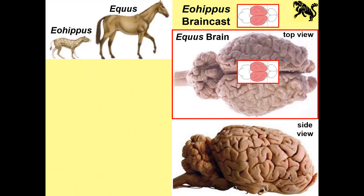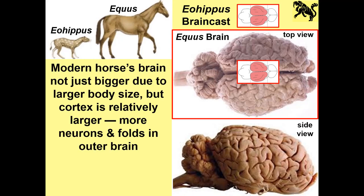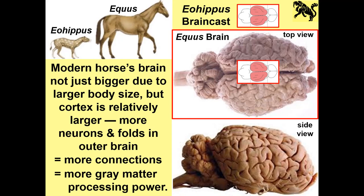If you look at Eohippus brain casts versus the Equus brain: mammals have large brains that press upon the bones of the cranium, so you get a good impression of the brain surface. In a reptile like T. rex, the brain cavity is half liquid or more, so you don't get a decent impression. Looking at the Eohippus brain cast versus the Equus brain, you can see not just a change in size but in complexity. The Eohippus brain cast is very smooth with not many ridges and folds, while Equus has lots of ridges and folds. It's not just bigger due to larger body size — the cortex is relatively larger, with more neurons and folds in the outer brain, meaning more connections and more gray matter processing power. They are smarter.